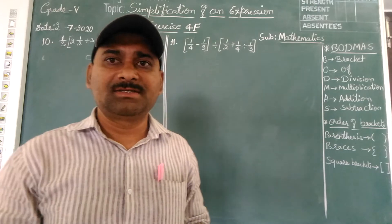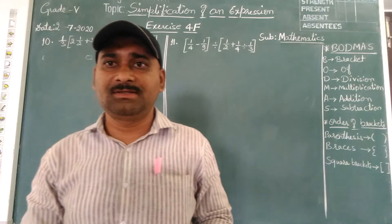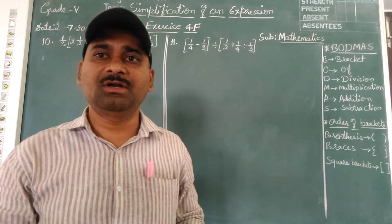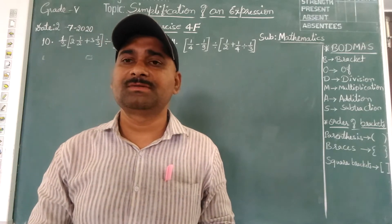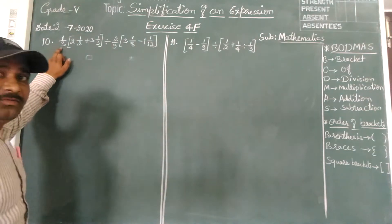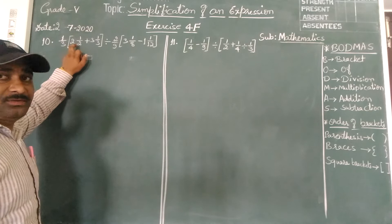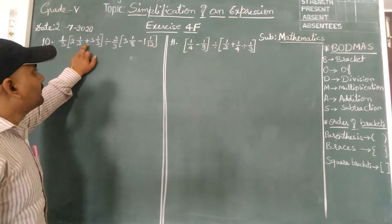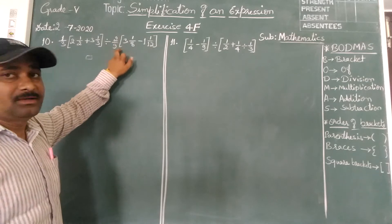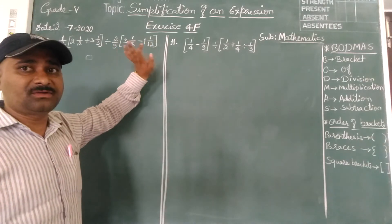In the last class, we solved till the 9th expression. So this is the 10th expression, children: 1 and 1/3 plus 2 and 1/2 plus 3 and 1/3, divided by 2/9 multiplied by 3 and 1/8 minus 1 and 1/12.